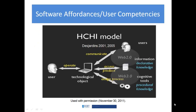Before jumping into the tools themselves, we'll take a quick look at the human-computer human interaction model — this is Desjardins and others, used with permission. It tries to illustrate the different types of competencies and affordances between technology and humans. You can think of affordances as the quality of an object to provide or make a specific function available to the users.